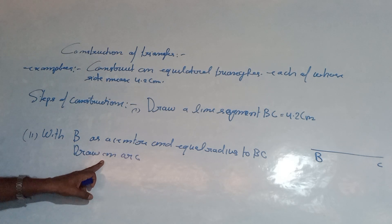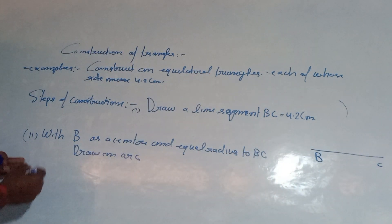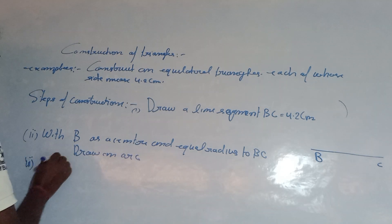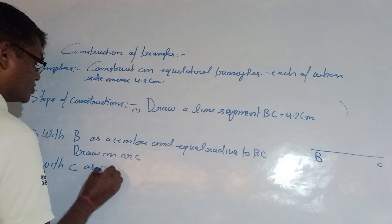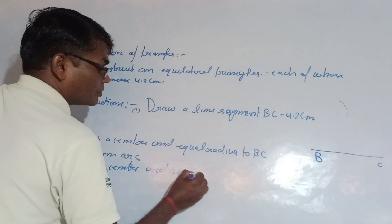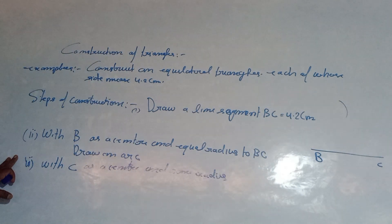Third point: with C as center and same radius as BC, draw another arc.